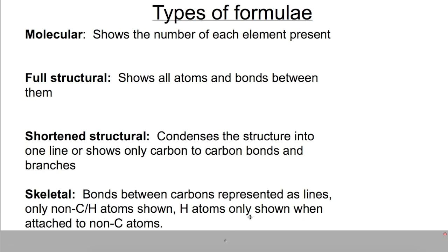Skeletal formulae show the bonds between carbons as lines only, not showing any of the carbon atoms or any of the hydrogen atoms. The only atoms that are shown are the non-carbon and non-hydrogen atoms, such as oxygen and nitrogen, and we only show hydrogen atoms when they are joined to a non-carbon atom.